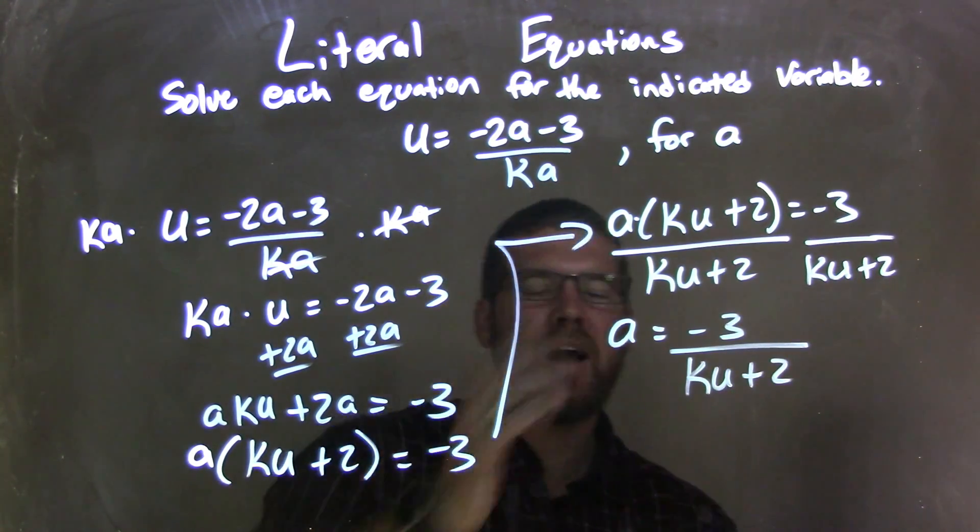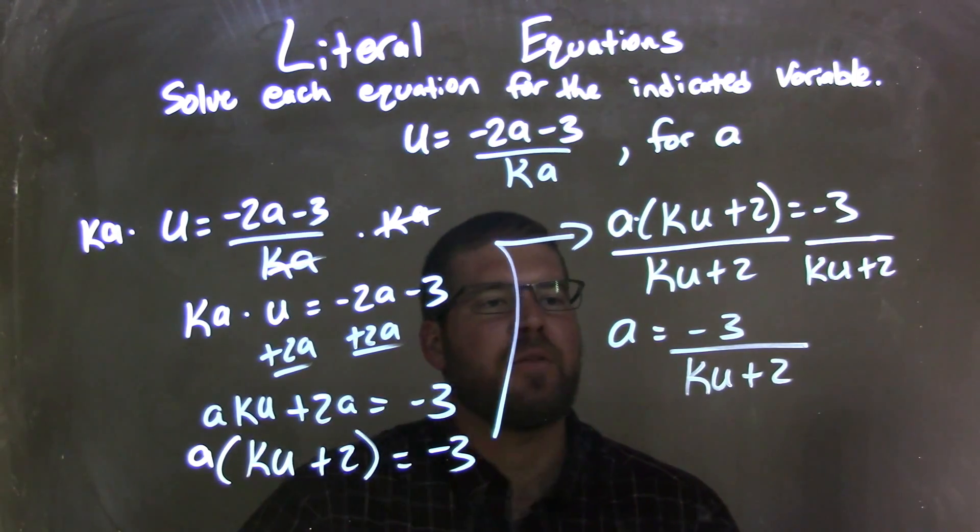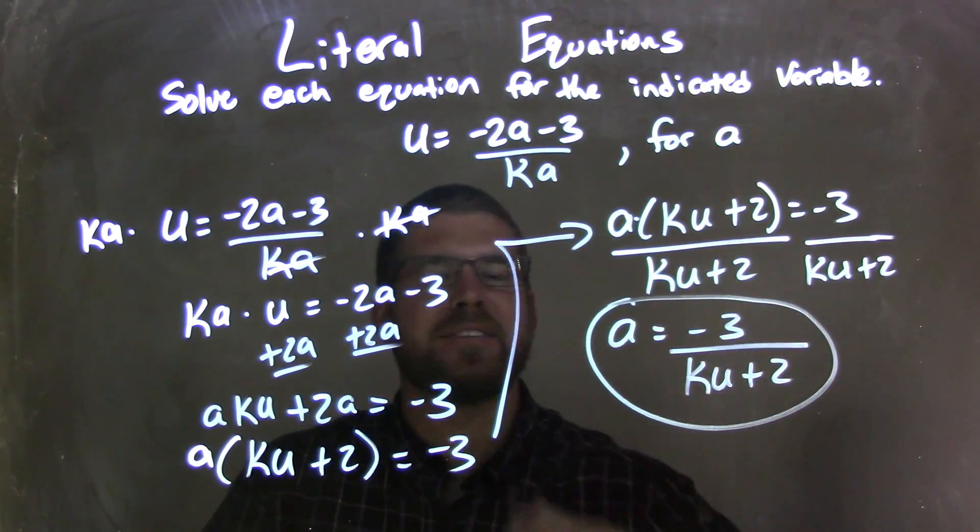And that leaves me with a by itself equals negative 3 over ku plus 2. And now I'm done. a is isolated by itself.